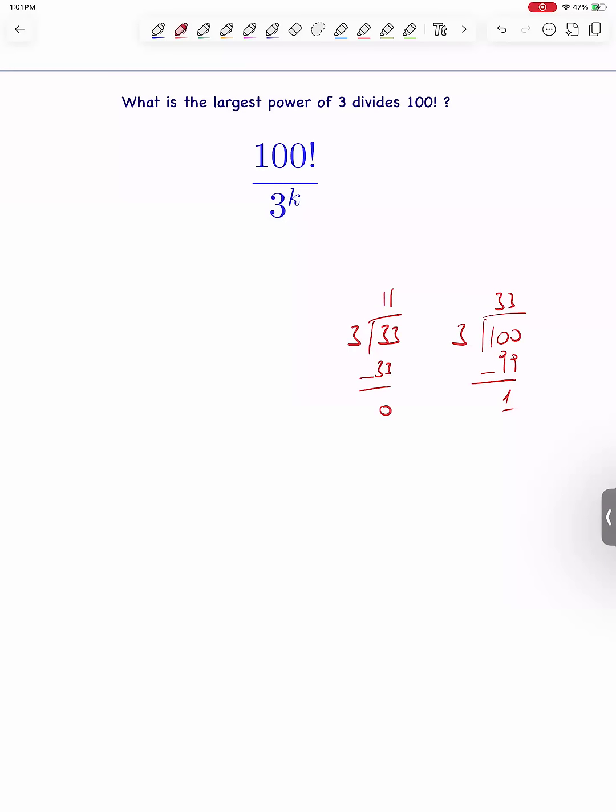Some of the multiples of 9 are also multiples of 27. They give an extra factor 3. We divide the quotient by 3 to find how many multiples of 27 are there. 3 times 3 is 9, which is 2 left.